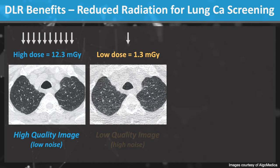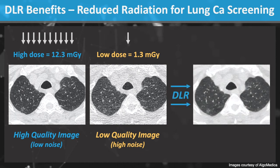In this separate image acquisition, the radiation dose was reduced by nearly 90%. These images have low quality due to high image noise. DLR can be used to reduce the noise and obtain high quality images from this low radiation dose scan.